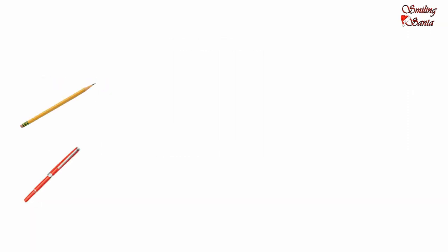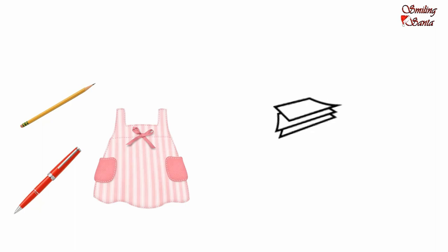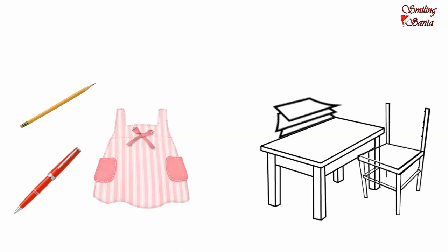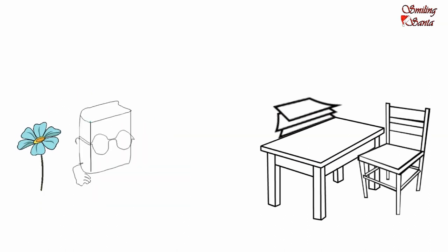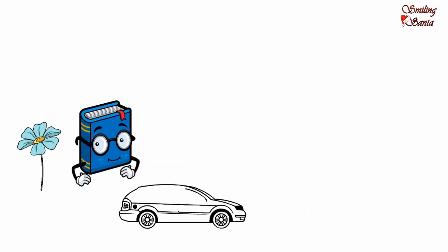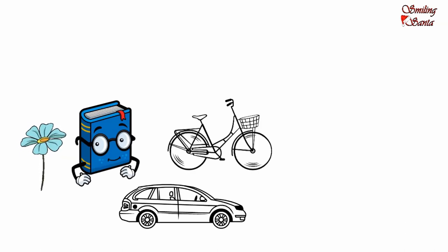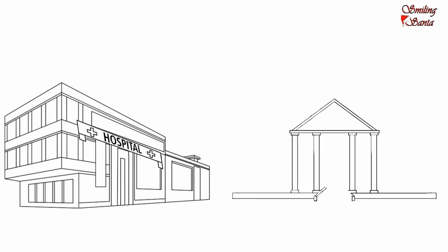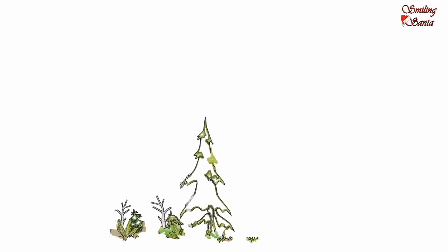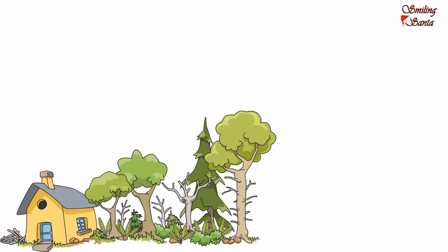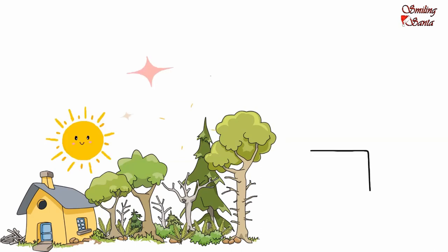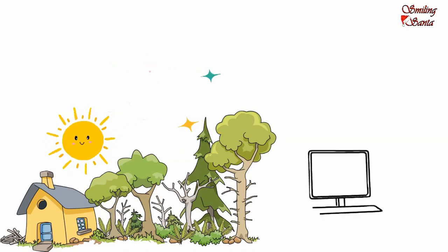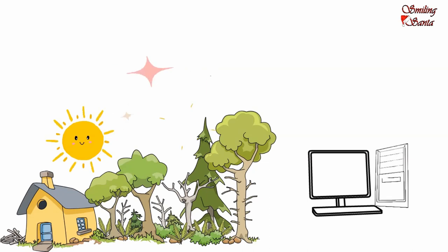More examples of neuter gender: pencil, pen, dress, paper, table, chair, flower, book, car, cycle, fan, hospital, school, mountain, tree, house, water, sun, star, computer, dust.